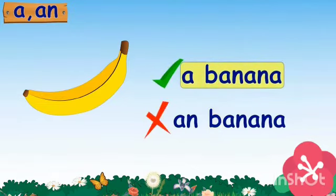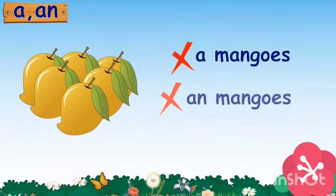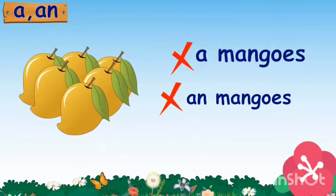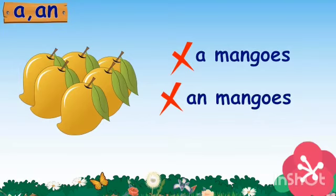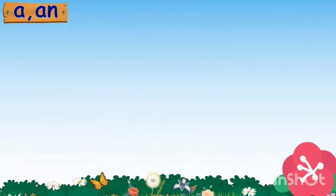Now, what do you see in this picture? These are mangoes. We will not use A or AN because the naming word is not singular — there are more than one mango. So we will neither use A nor AN. Instead, we will say: these are mangoes. Remember, children, if there is a singular object, then we must use A or AN before it.